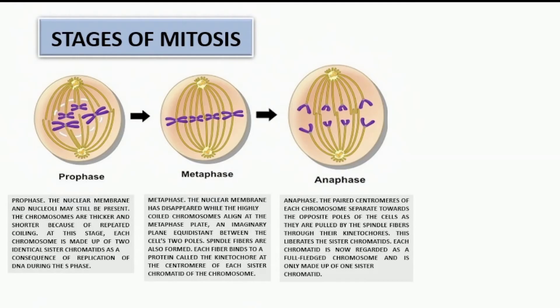The third stage is anaphase. The paired centromeres of each chromosome separate toward the opposite poles of the cell as they are pulled by the spindle fibers through their kinetochore. This liberates the sister chromatids.